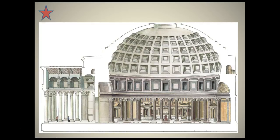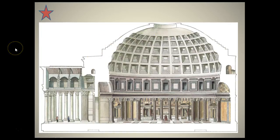Builders made the mixture lighter by adding pumice and empty clay amphora, or pots. The use of coffers — those sunken spaces that look like decorative panels — also helped lessen the dome's weight without weakening the structure, providing a handsome pattern of squares within a vast circle. This was quite an innovation, and it would not have been possible without the invention of concrete that we talked about earlier.